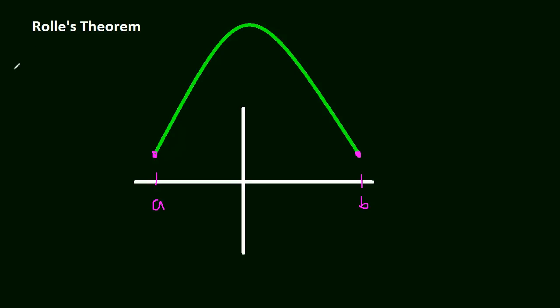If we were to write that out mathematically to say equal heights, all we'd have to say is F of A is equal to F of B, right? The height at A is equal to the height at B. Okay.